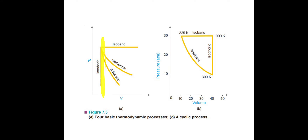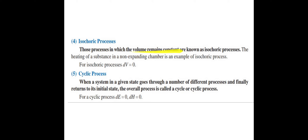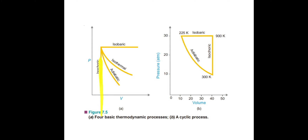The fourth type is the isochoric process. Those processes in which the volume remains constant are known as isochoric processes. The heating of a substance in a non-expanding chamber is an example: when we heat a gas in a chamber that cannot expand, there is no expansion and volume remains the same. For an isochoric process, ΔV = V2 − V1 = 0. In the graph, the isochoric process is shown by the line where volume remains constant.